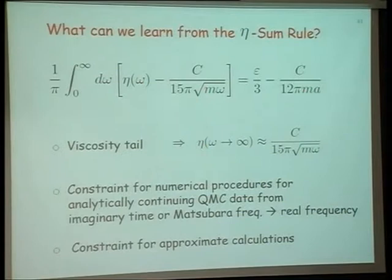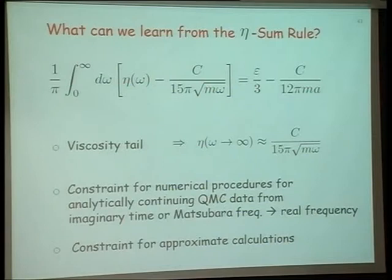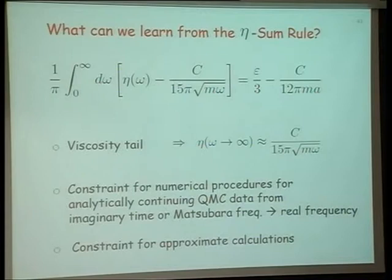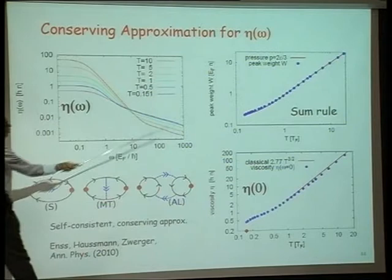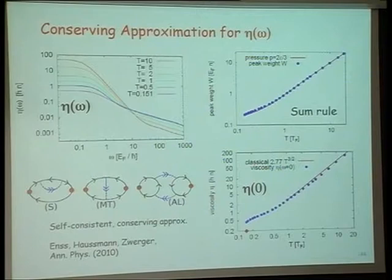What do we learn from the eta sum rule? The first thing we learn is a new tail: there's a universal tail which goes like square root of omega with contact as its coefficient. The second thing is that such sum rule provides a constraint for numerical procedures for analytically continuing quantum Monte Carlo data from imaginary time and Matsubara frequency to real frequencies. Many quantum Monte Carlo people are interested in calculating this despite all the problems of maximum entropy and so on. Third, we provide a constraint for approximate calculations. My friend Thomas Schaefer beat me to it, and they published some conserving approximations and they checked that they used our sum rule to make sure that everything was okay. We unfortunately have made no progress towards proving the minimum value of eta, but that's as far as we have been able to go with exact results for eta. But actually we have something very cute with zeta and an experimental proposal.